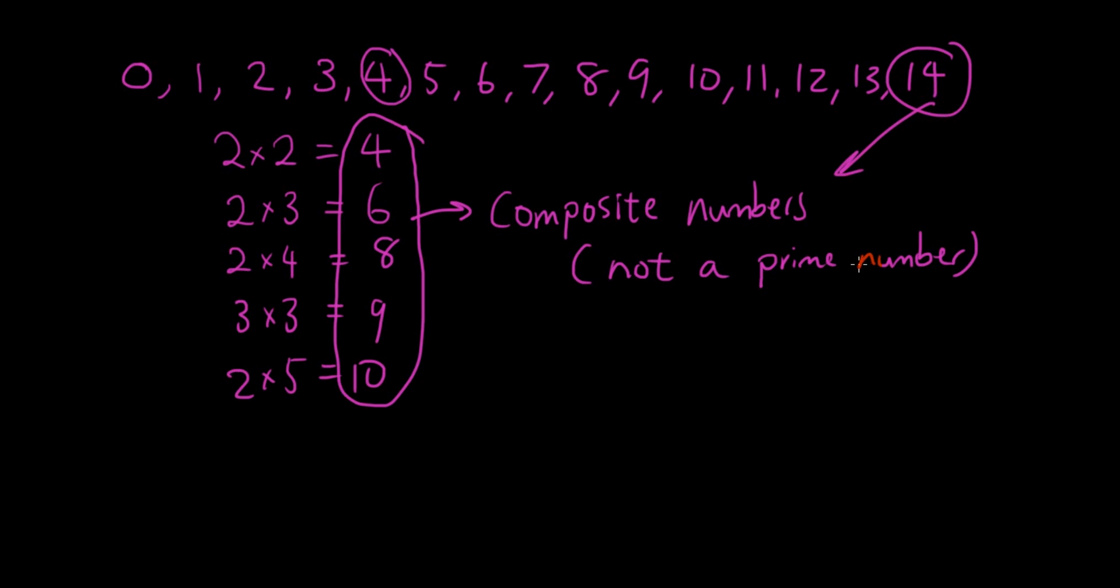So for example, 14 is a composite number. Why? Because 2 times 7 is 14. So I've just used 2 smaller numbers multiplied together to make up 14. So it's not a prime number.